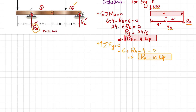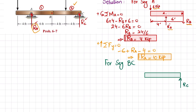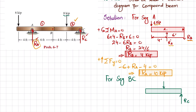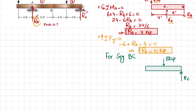Now moving to segment BC. Drawing the free body diagram: point C has reaction RC, and at a distance of 4 feet there is a load of 8 kips. At point B, by Newton's third law, the force on BC is upward (RB = 4 kips). The distance between these two loads is 4 feet, and this distance is also 4 feet.